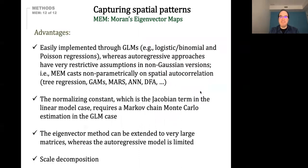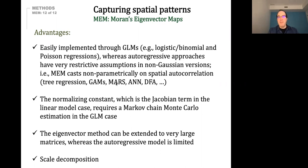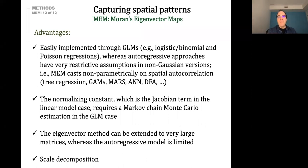The advantages of Moran's eigenvector maps are that they're easily implemented in any GLM or more complex models. They have been used in tree regressions, random forests, GAMs, multivariate additive regression splines, and artificial neural networks. This set of Moran's eigenvector maps, since its development about 15 years ago, has been widely used by ecologists in many different applications.